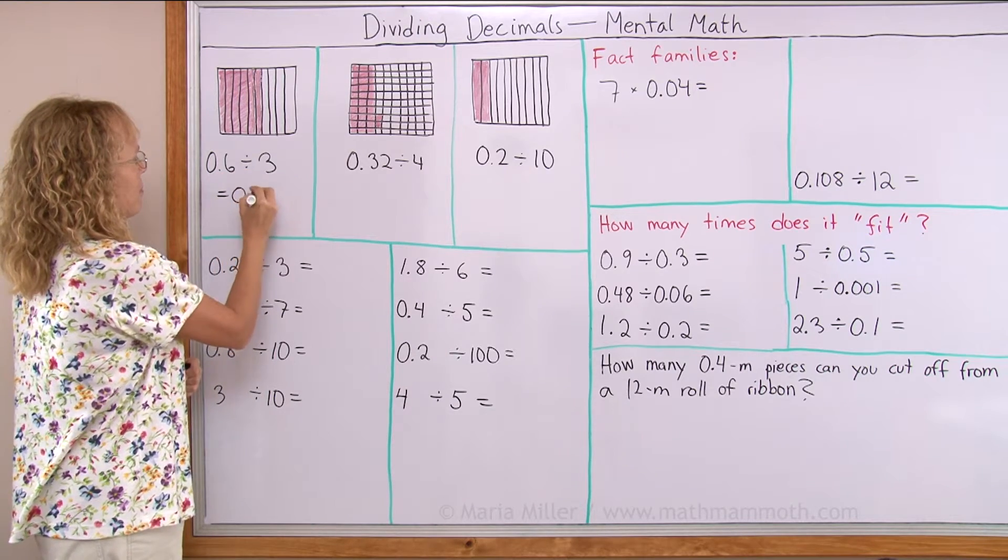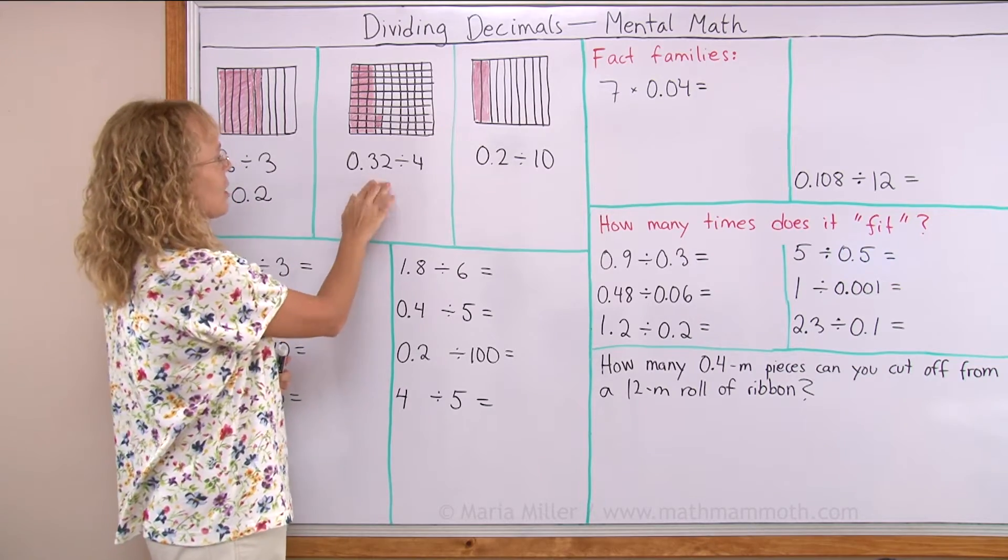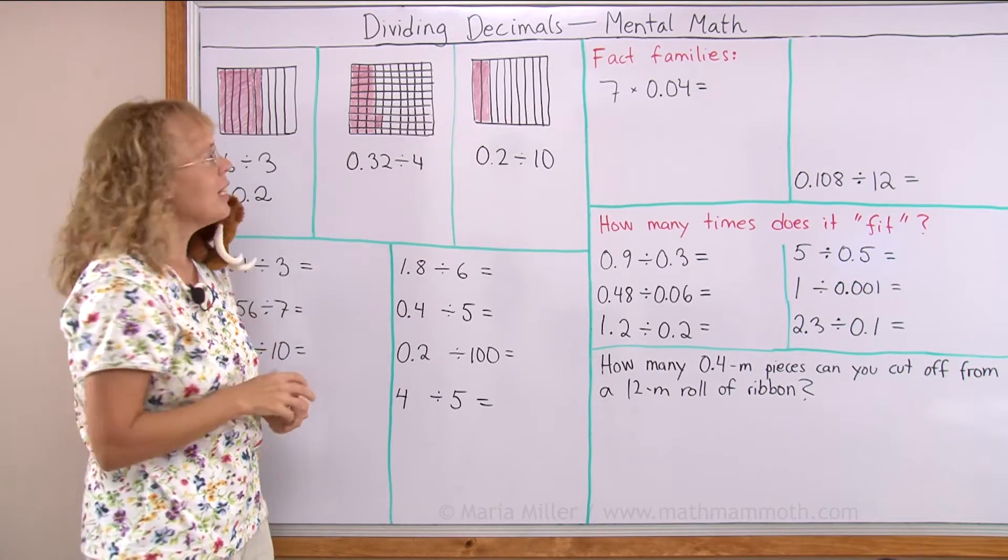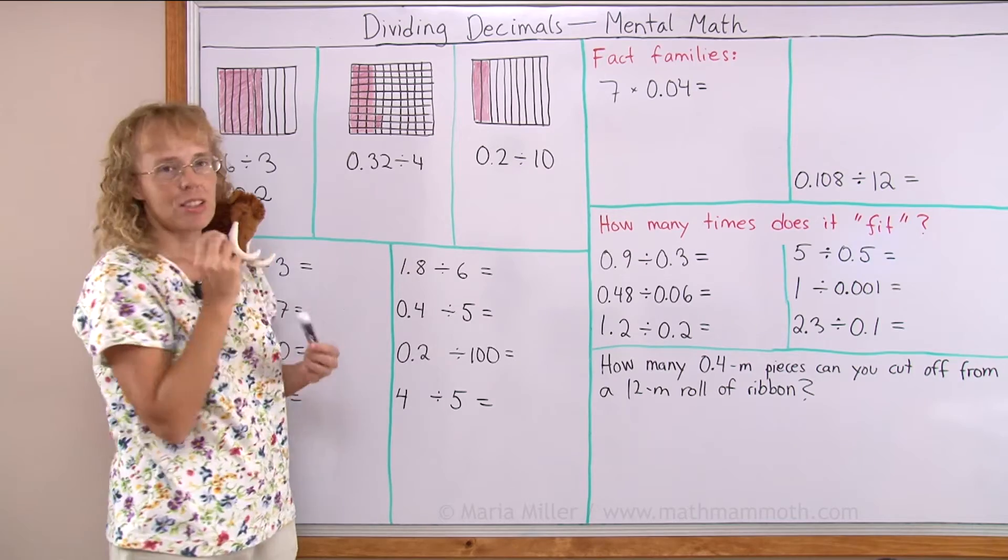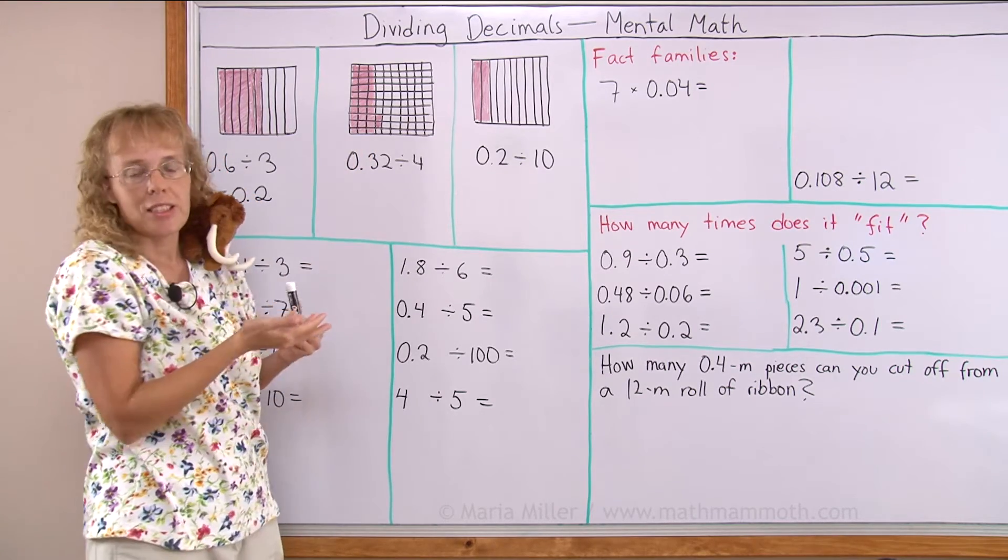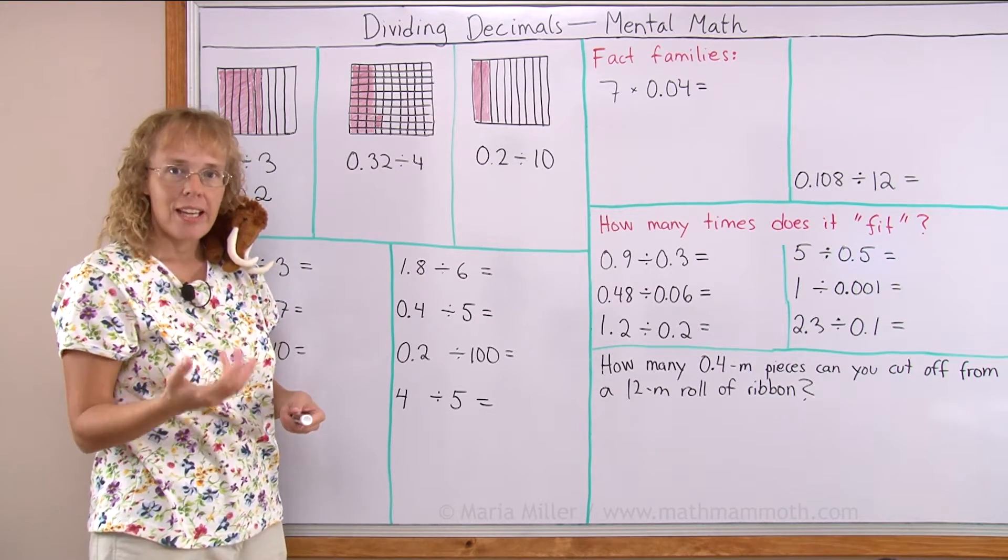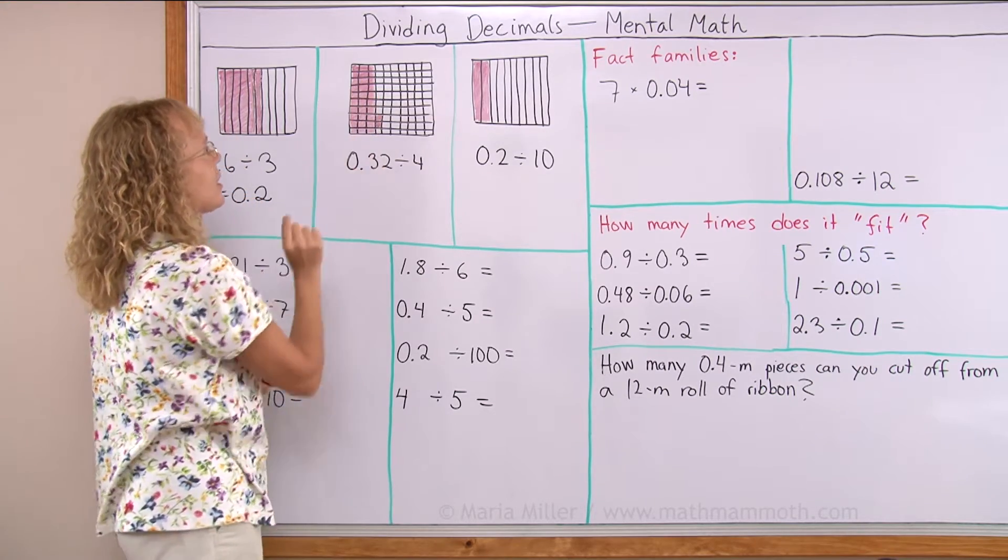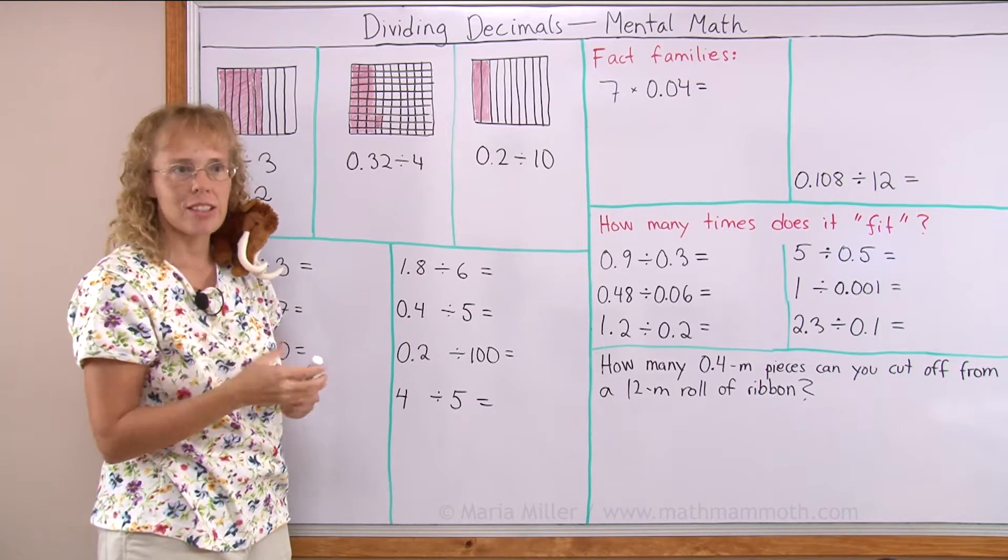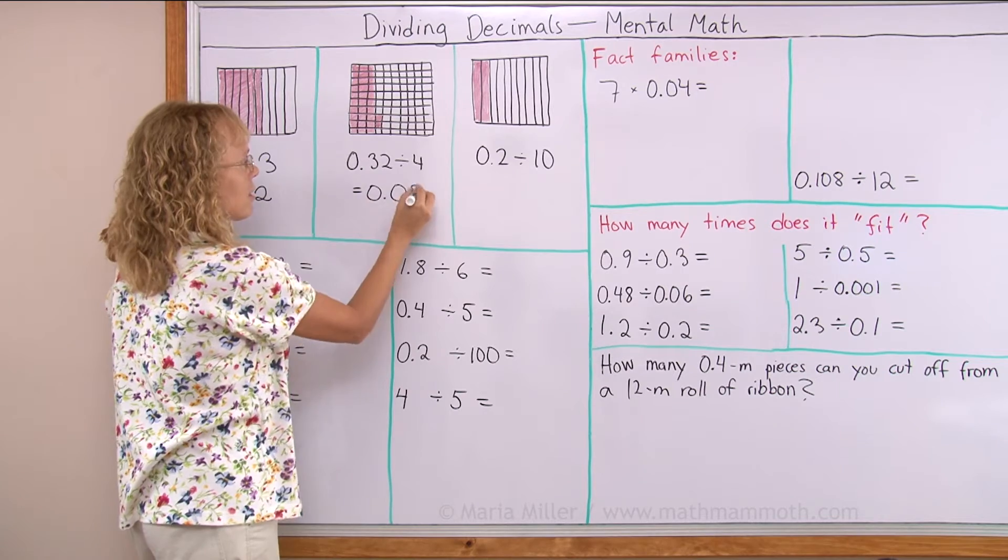Okay, nothing much to that. Here the same idea works. I have 32 hundredths and if I have four people sharing them equally, it's like in the picture. You see 32 pieces. So all I do in my mind is 32 divided by four equals eight. Each person would get eight pieces and those pieces are hundredths, right? So the answer is eight hundredths written like this.